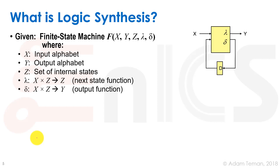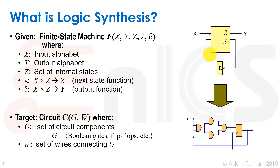Mathematically, we're given a finite state machine f of x, y, z, lambda, and delta. Where x is the input alphabet, y is the output alphabet, z is a set of internal states, lambda is a next-state function from x,z to z, and delta is an output function from x,z to y. Synthesis takes this finite state machine — the inputs, the function, the outputs, and the current state — and turns it into a target circuit c of g and w, where g is a set of circuit components (boolean gates, flip-flops, etc.) and w is a set of wires connecting g together.